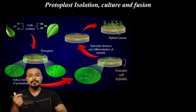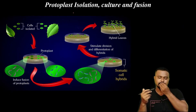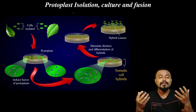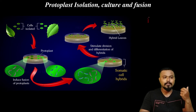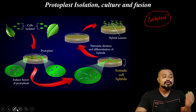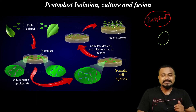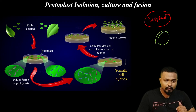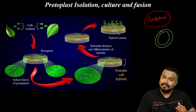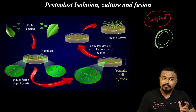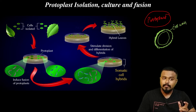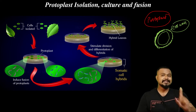Next topic: protoplast isolation, culture, and fusion. What do you mean by protoplast? In a plant cell, there is a cell wall — the upper membrane — and inside it is the plasma membrane. The plant cell has a thick cell wall, unlike animal cells which do not have a cell wall.